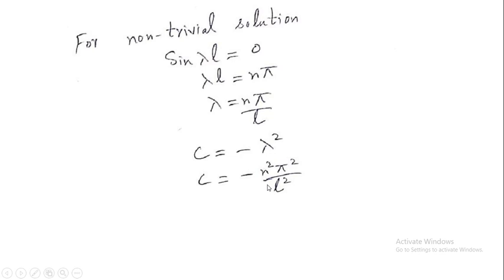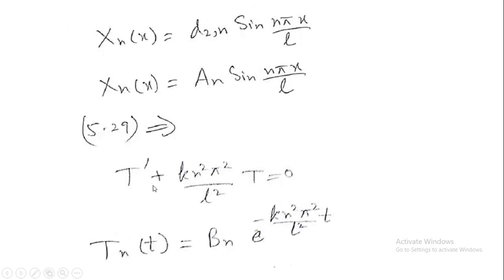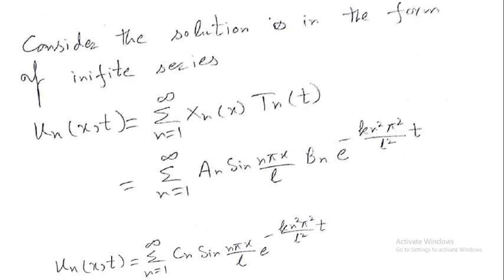Since c = −n²π²/L², substituting into equation 5.29 and solving this first-order separable ODE — whether by separation of variables or integrating factor — gives the solution Tₙ(t) = bₙ·e^(−kn²π²t/L²).